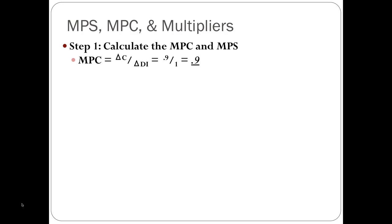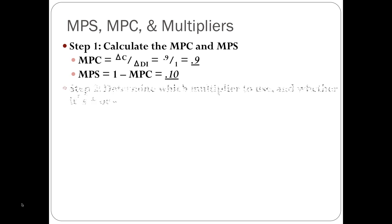Step one is done. Our MPC is 0.9 because they're consuming 90% of every dollar. Our MPS is 1 minus the MPC, which is 0.1. Notice that 0.9 plus 0.1 adds up to 1.